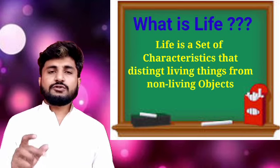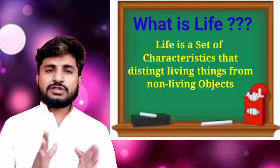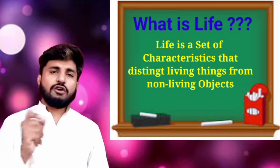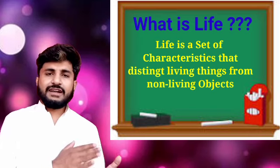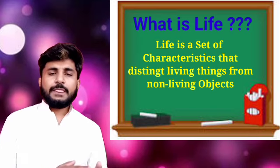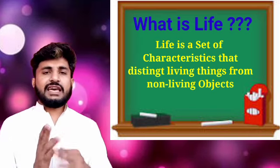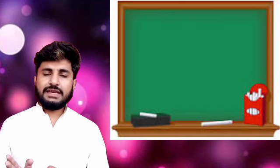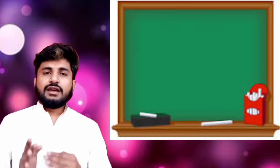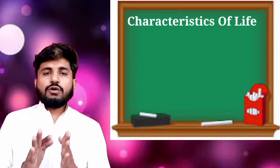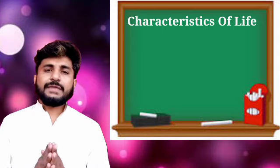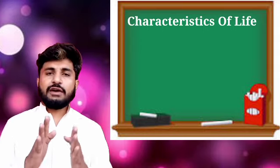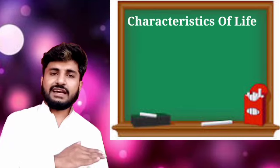یعنی کہ زندگی خصوصیات کا وہ مجموعہ ہے، جس کے ذریعے ہم جاندار اور بے جان چیزوں کے درمیان فرق کر سکتے ہیں۔ اس سے ہمیں پتہ چلتا ہے کہ کون سی چیز جاندار ہے اور کون سی چیز بے جان ہے۔ So, کون کون سی وہ characteristics ہیں جن سے ہمیں پتہ چلتا ہے کہ living organisms جو ہیں، وہ non-living سے الگ ہیں۔